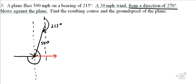Now it's tip-to-tail, so I can draw my resultant vector. The wind is blowing the plane to the right — that's what's happening. The wind is 30 miles per hour, so this is 30. I have 500 and that 30. I'm trying to find the angle between the two vectors. I'll use both 215 degrees and 270 degrees to figure out that angle.